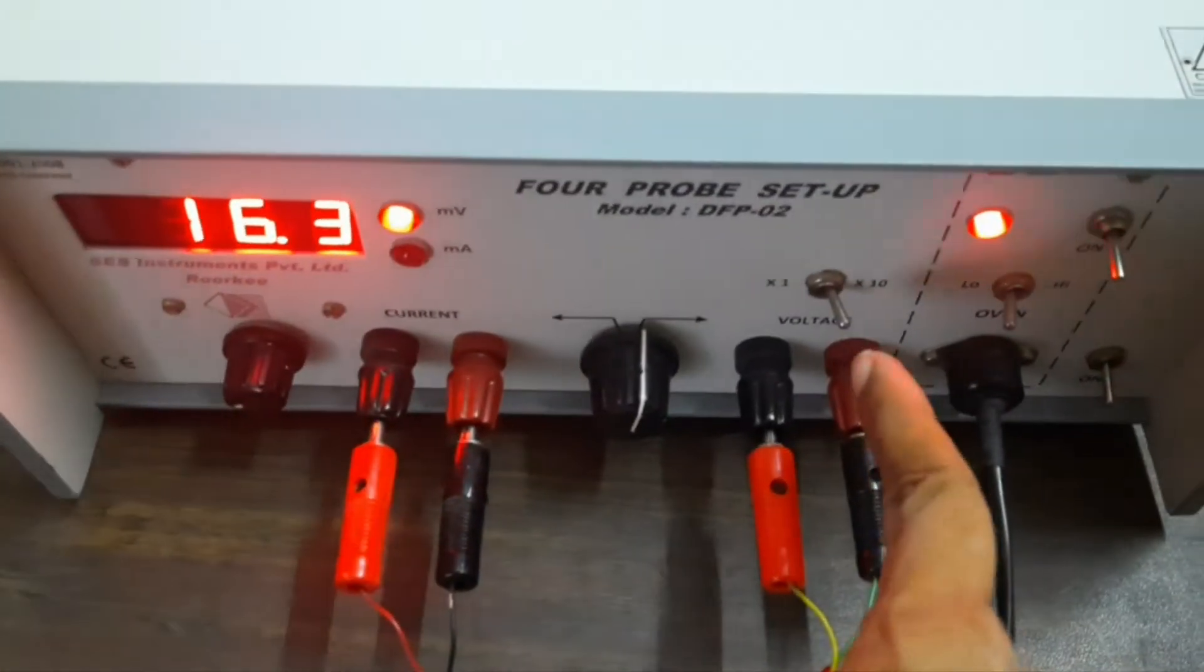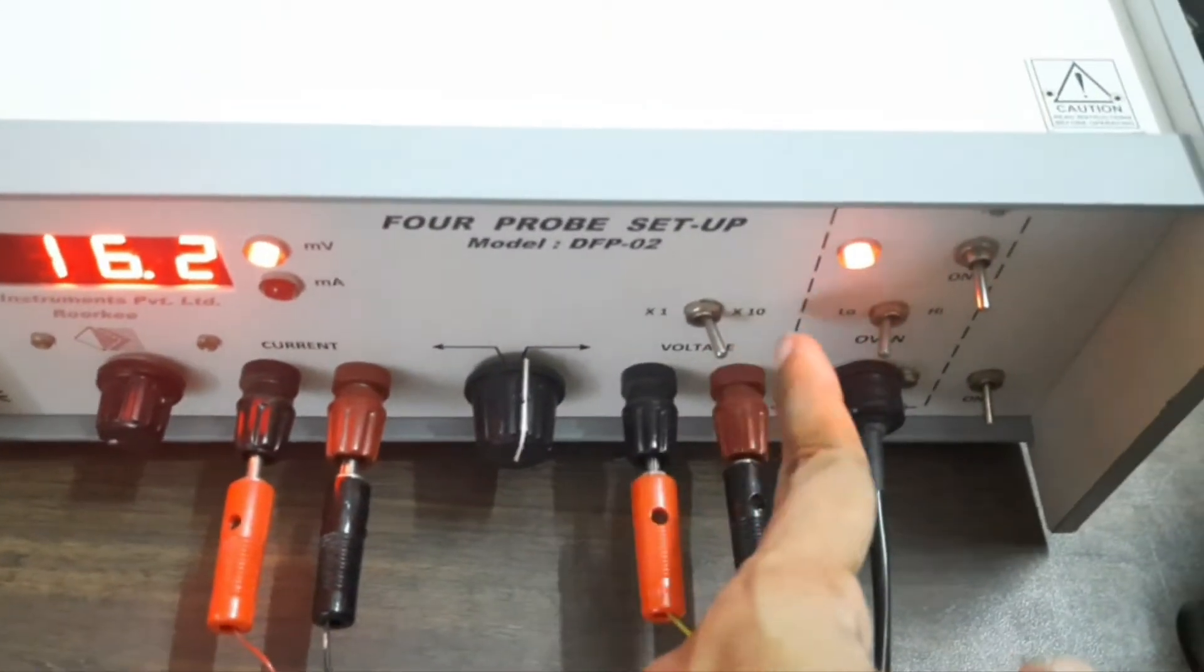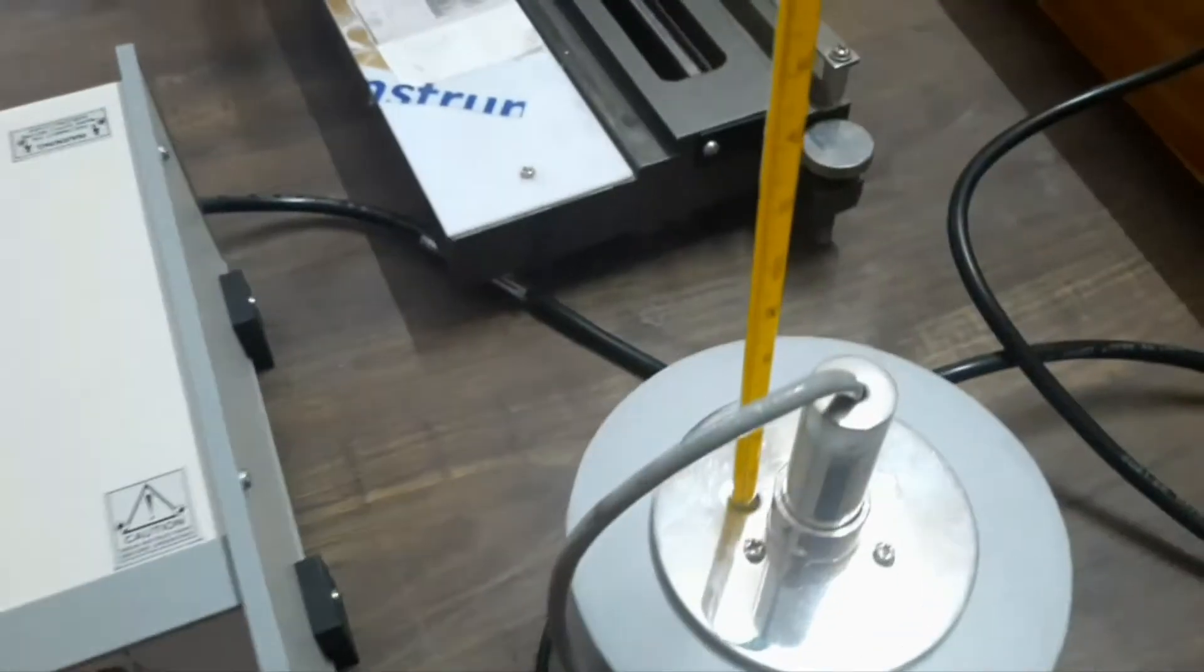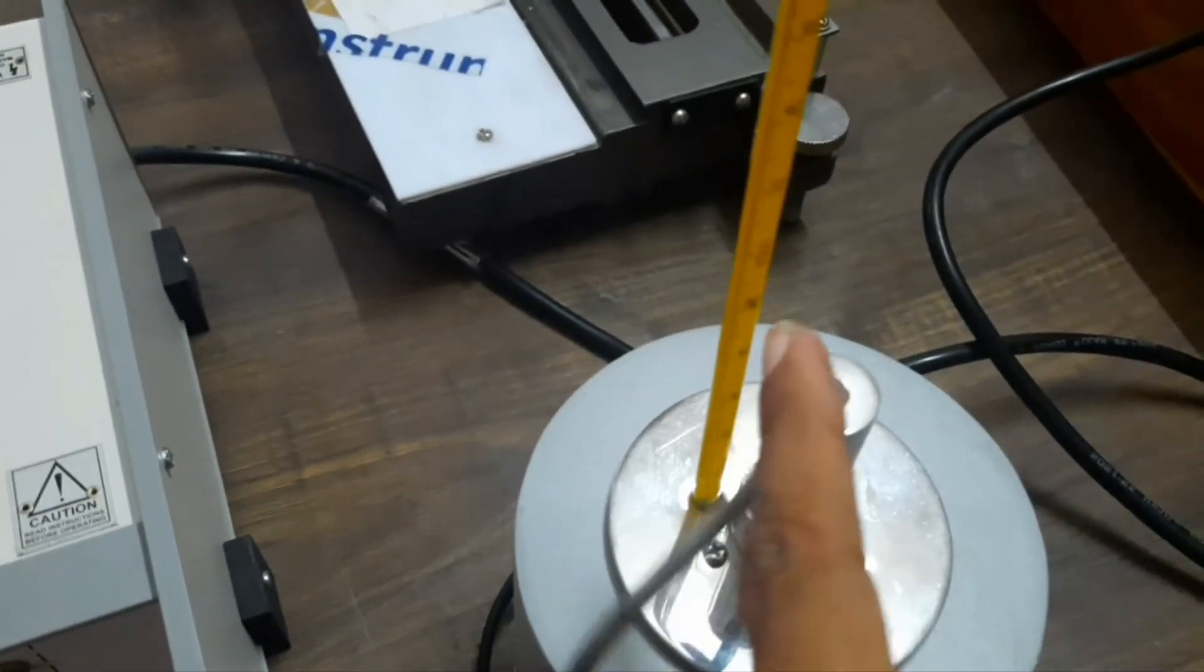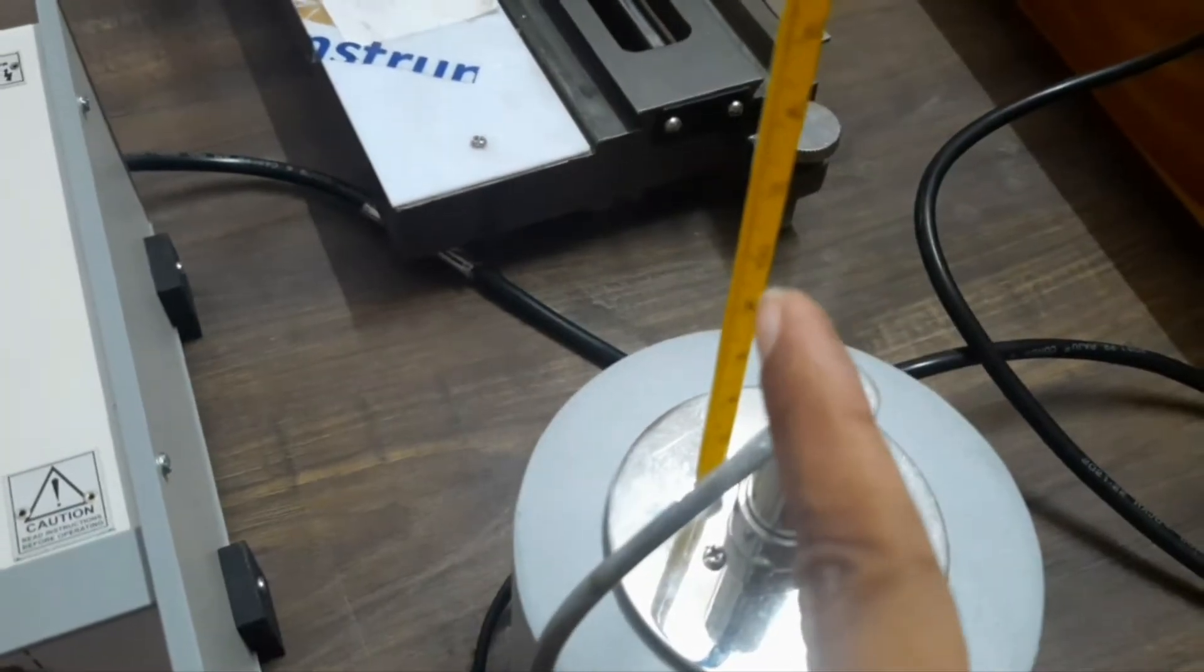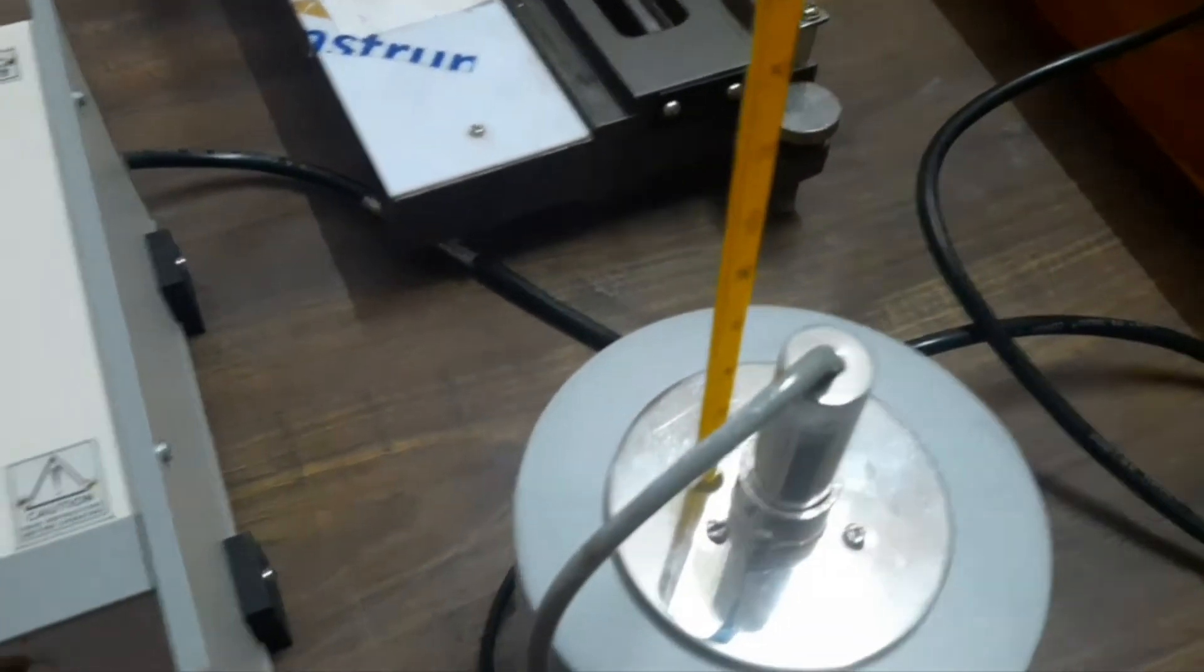Here is the multiplier for voltage, 1 and 10. We have kept at 10. So here we have to note on the voltage with respect to temperature each 5 degree Celsius increase of temperature.